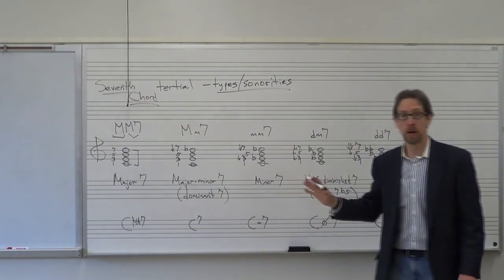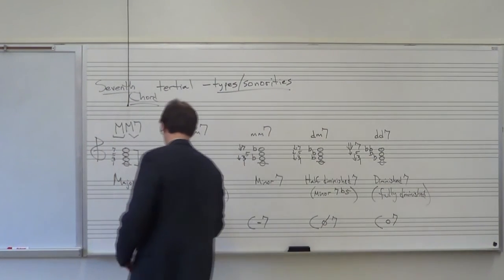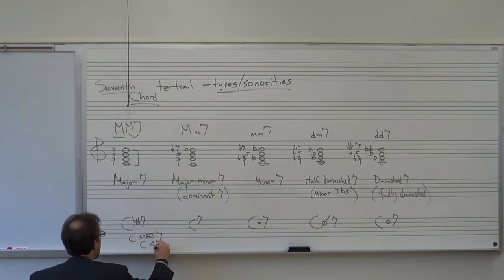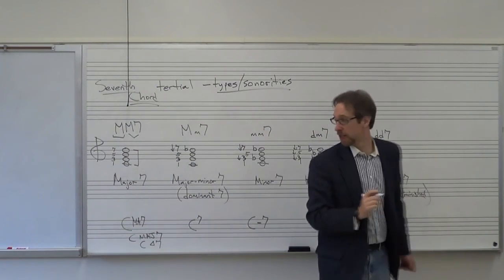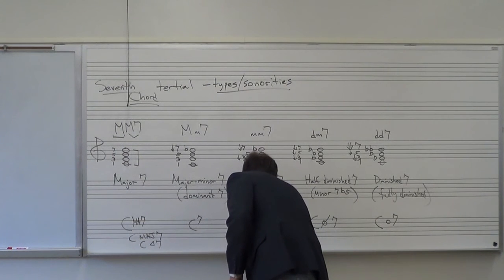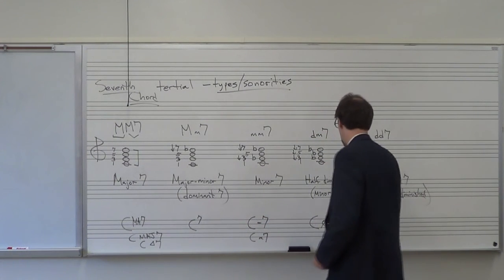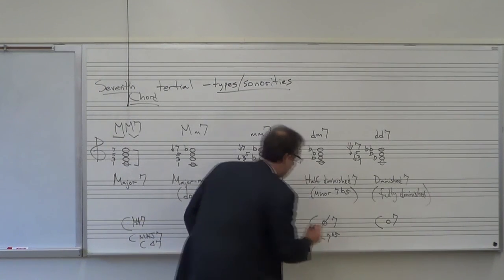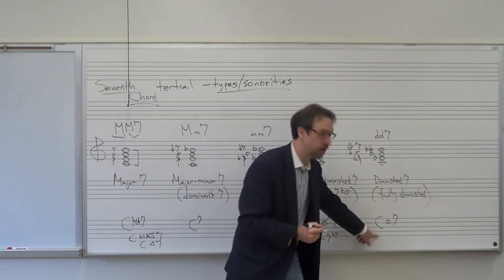There are some other variations, just like for triads. Sometimes people write C-MAJ or C-triangle-7 for major seven. For dominant, this is the only way it's written: C7. In minor, sometimes it's C with a lowercase m, or a line over the m. For the half diminished, sometimes in jazz you'll see C minor seven flat five — meaning make a C minor seven and lower the fifth a half step.